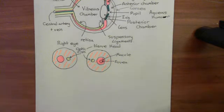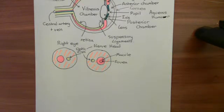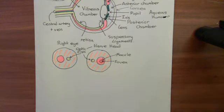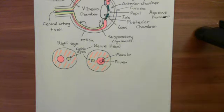The fovea's ability to resolve an image and see in detail is much greater than the other portions of the retina, which is why if you want to read something, you look directly at it. You don't read something out of the corner of your eye, because you'd be using a portion of the retina that has lower visual acuity than the fovea. When you look at something directly, you're making sure the image is on your fovea, using the portion with the highest visual acuity.